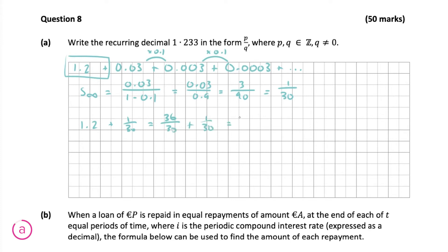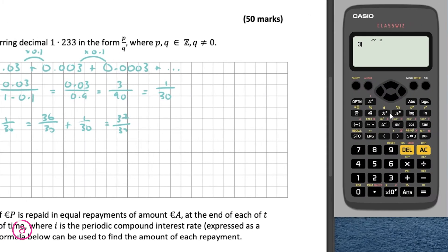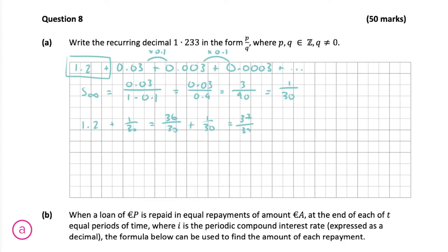We therefore have an answer of 37 over 30. If we go into our calculator and type in 37 over 30, pressing the decimal button gives us 1.23 recurring — so we were correct in our answer.